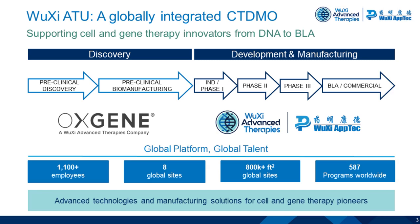Oxygen and WuXi Advanced Therapies work together to provide an end-to-end solution for cell and gene therapy companies. Oxygen is working primarily upstream, focusing on the discovery work where we engage with clients quite early. We introduce our viral vector production systems for them and offer to incorporate their genes of interest into our expression plasmids. These expression plasmids are then used together with our packaging plasmids to produce viral vectors in preclinical biomanufacturing runs, and this can be done up to a scale of 10 liters in stirred tank reactors.